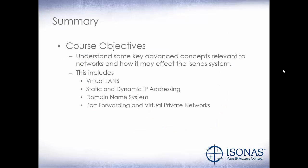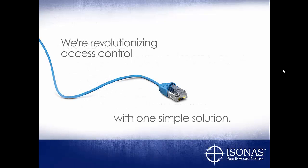In summary, we talked about some key advanced concepts relevant to networks and how they may affect an Isonus system. This includes virtual LANs — typically power nets and IP bridges will be on their own separate VLAN. Static and dynamic IP addressing — most IT administrators will use both: static for servers and dynamic for everything else. DNS — how it translates a URL like www.isonus.com to an IP address so we can communicate. And port forwarding and virtual private networks — how we connect with devices behind a private network while we're outside of it. Thank you for attending this course and we hope it was beneficial to you. Have a great day.